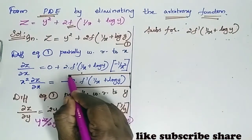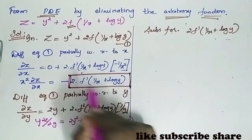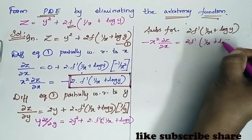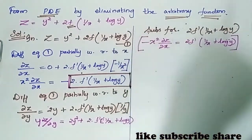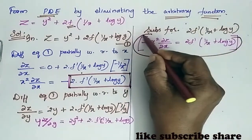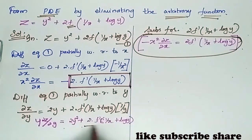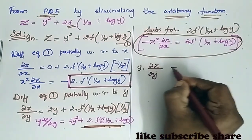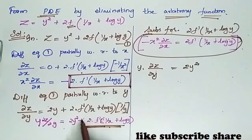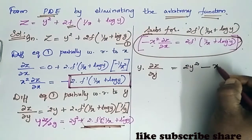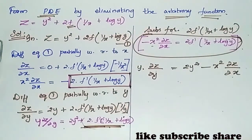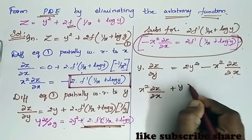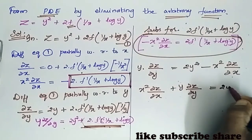Now substitute for 2 into f dash of (1/x + log y). We know that minus x squared ∂z/∂x equals 2 into f dash of (1/x + log y). Substituting this value, y into ∂z/∂y equals 2y squared minus x squared ∂z/∂x. Simplifying, x squared ∂z/∂x plus y ∂z/∂y equals 2y squared.